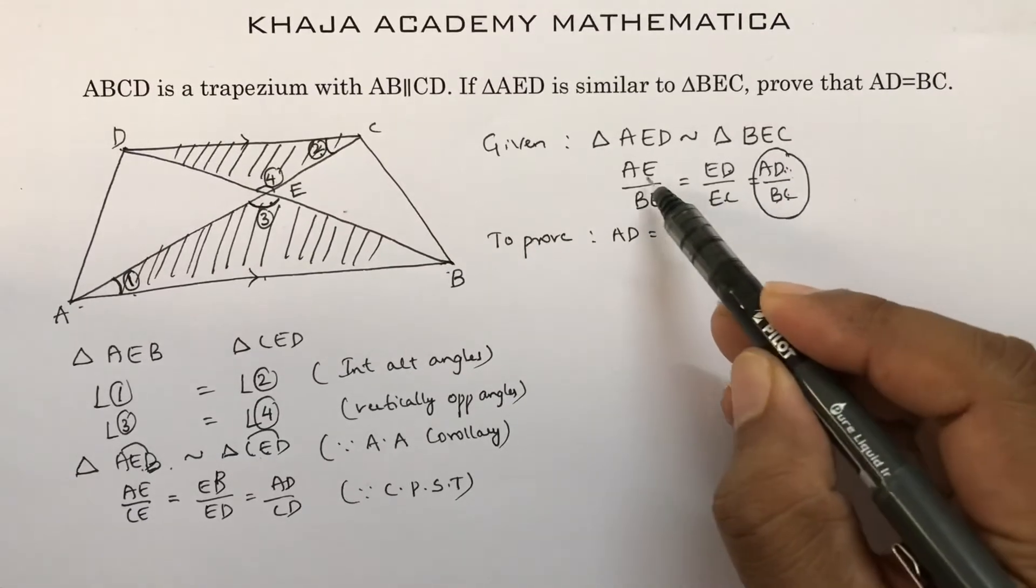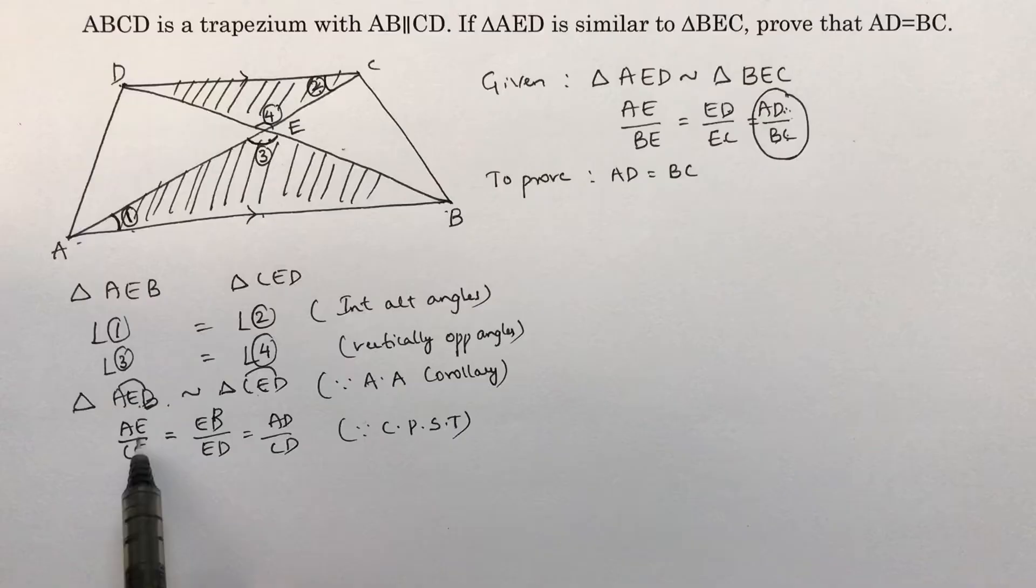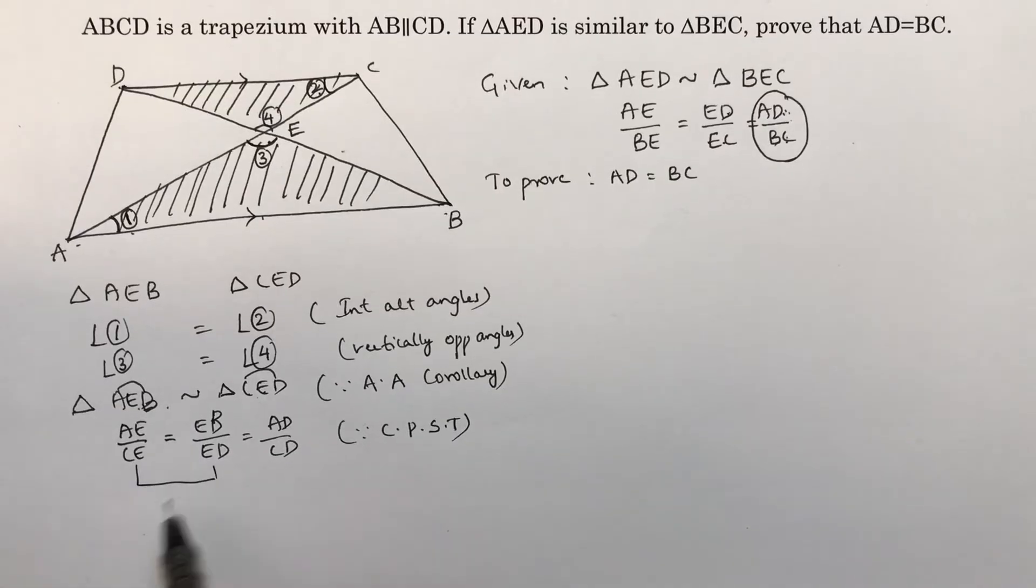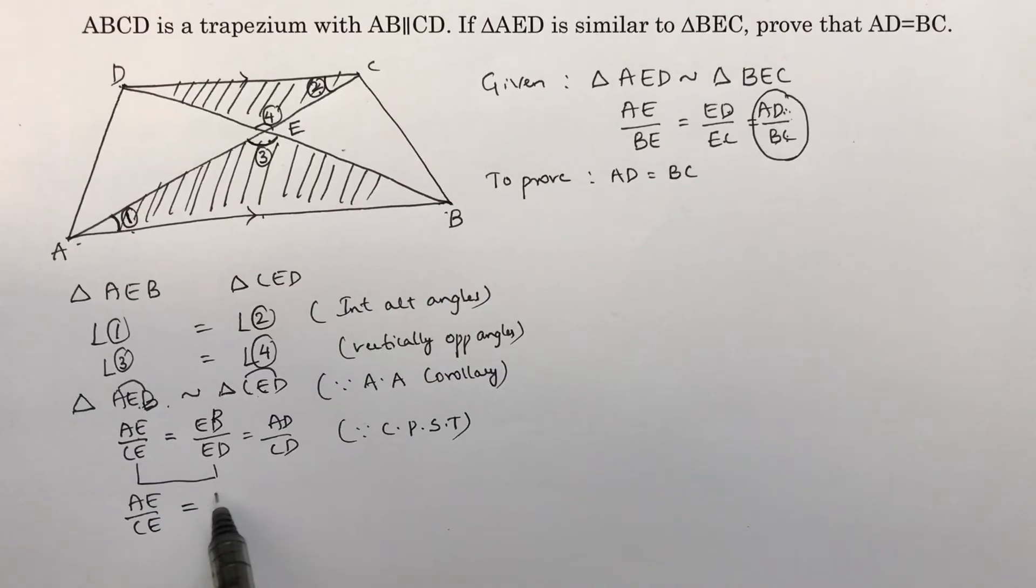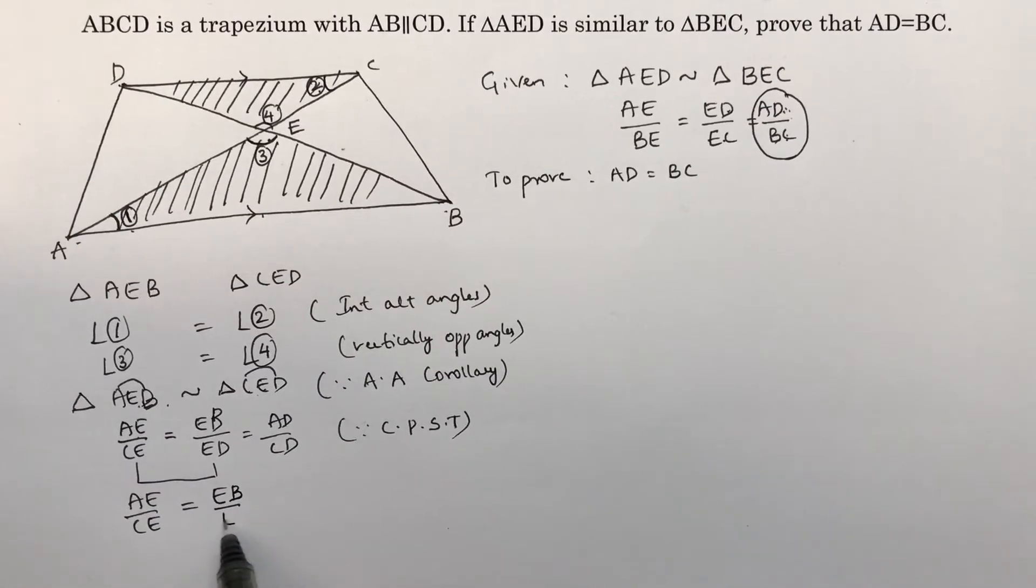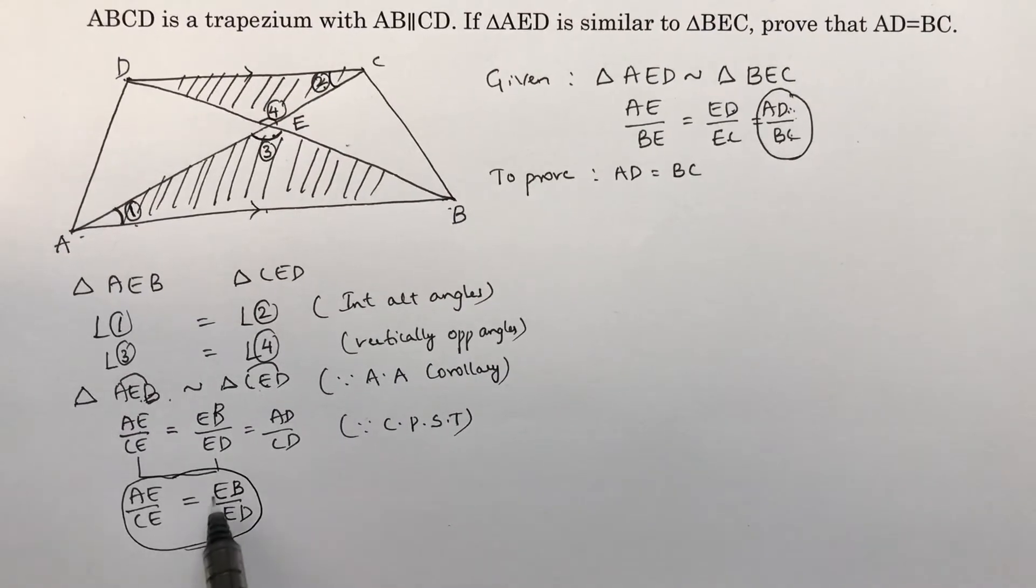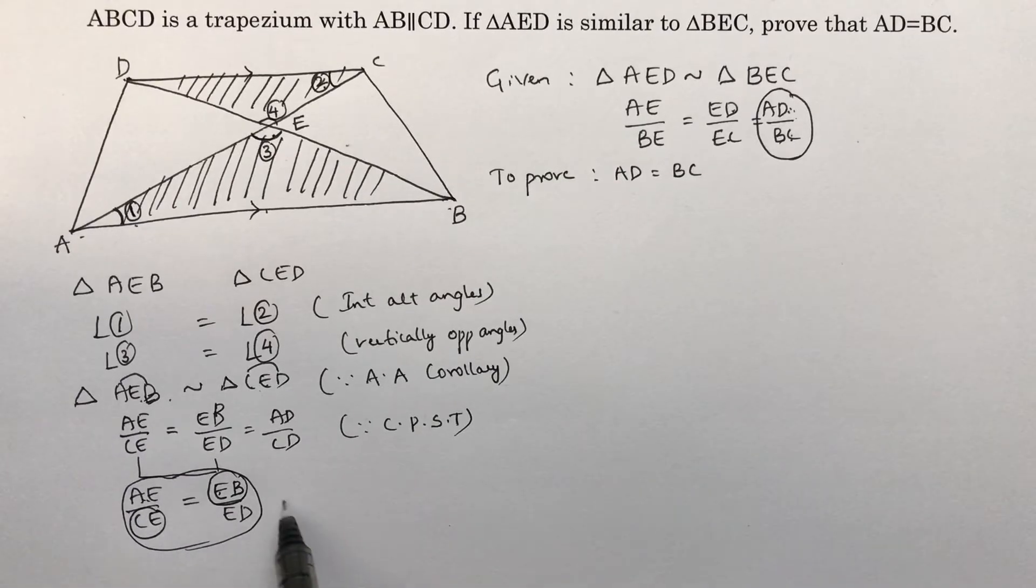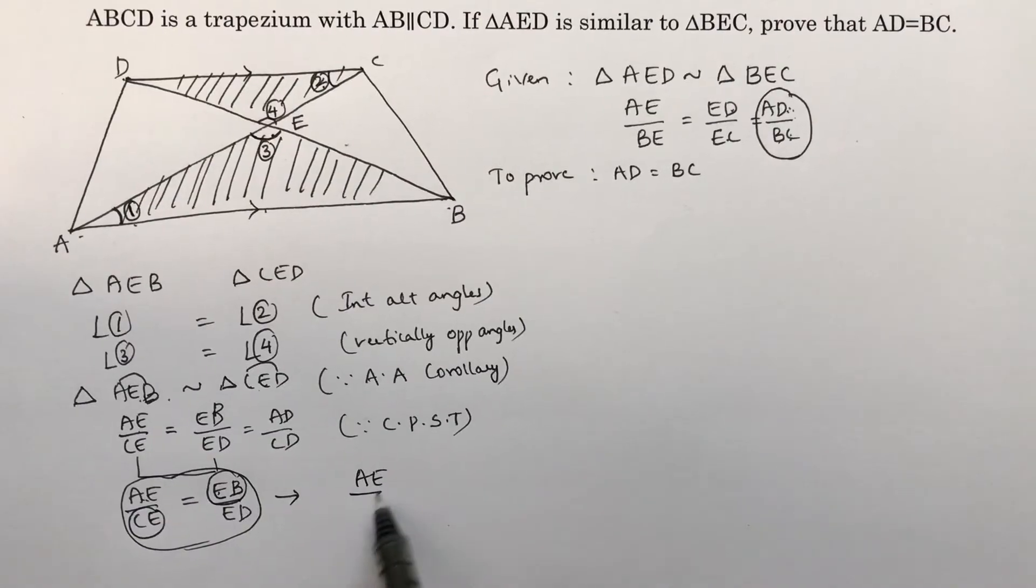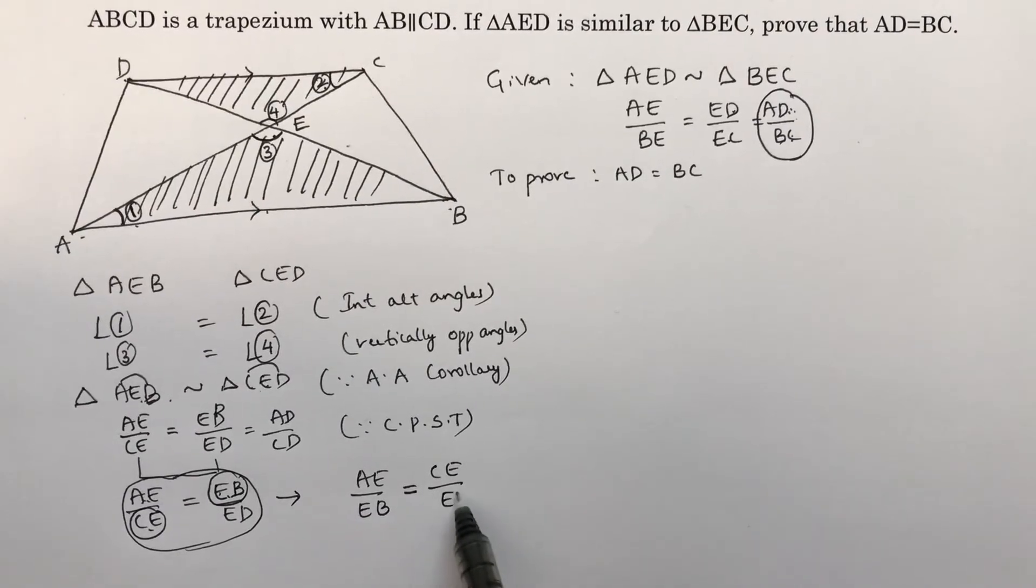Take this equation: AE by CE equals EB by ED. If you will just interchange these two places, what you will get? See, AE by EB equals, this if I will bring here, CE by ED.